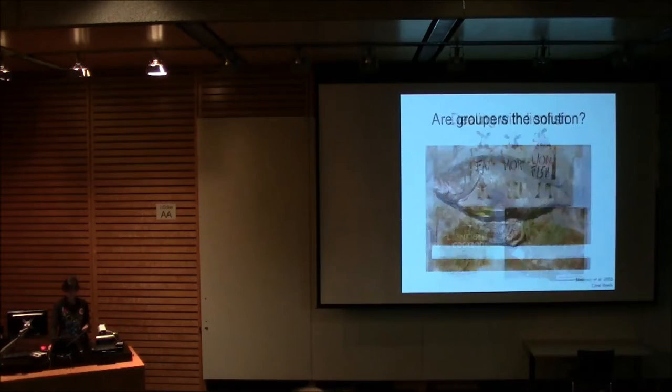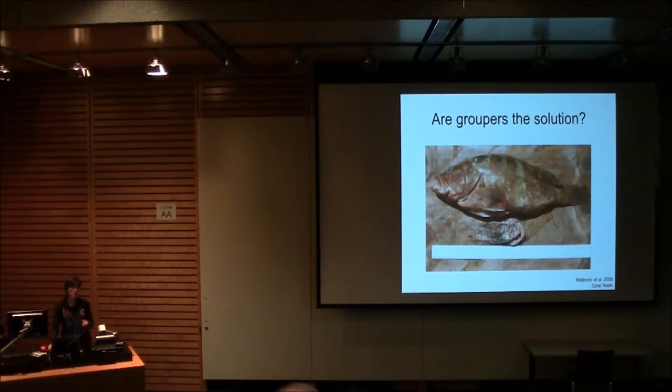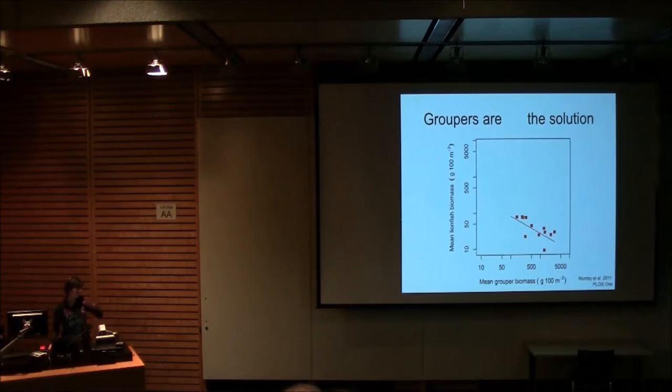Now, for this talk, we thought that perhaps groupers, native groupers, large-bodied predators were the solution. A PhD student of mine who was working on groupers discovered lionfish, young lionfish, in the stomach of groupers. Published a little note about this, and a lot of people jumped on this saying, yay, recover groupers, we have a solution to the lionfish problem. And in fact, another research group working elsewhere in the Bahamas published this relationship that relates lionfish biomass to grouper biomass and suggested that groupers were indeed the solution. Because when you've got lots of groupers, you don't have a lot of lionfish.